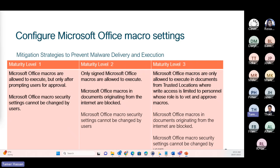Moving to level two, we add that only signed Microsoft Office macros would be allowed to execute, and Microsoft macros in documents originating from the internet are blocked. Then level three: Microsoft Office macros are only allowed to execute in documents from trusted locations, while write access is limited to personnel whose role is to vet the approved macros. This is how we move forward through the maturity levels.